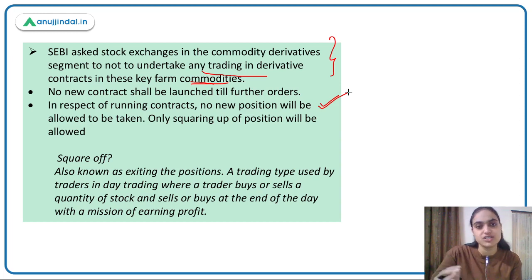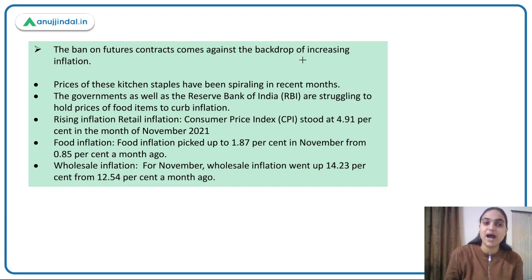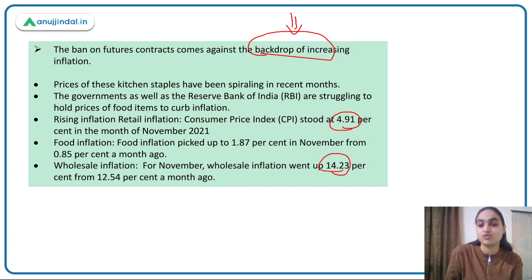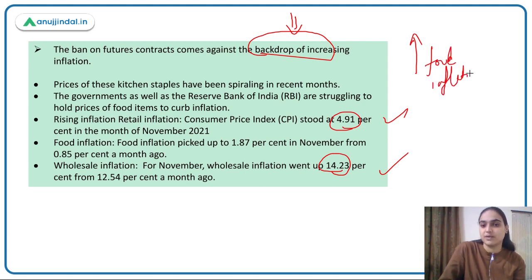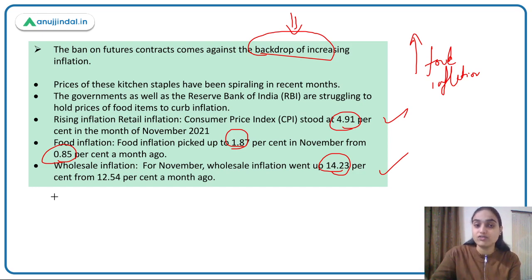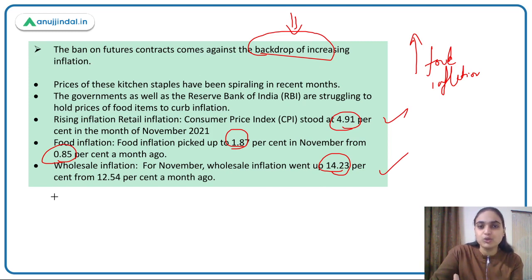The ban has been imposed against the backdrop of increasing inflation. CPI rose to 4.91% and wholesale price inflation rose to 14.23%. A major reason behind rising inflation was food inflation — it was 0.85% one month and increased to 1.87% in November. Kitchen staple commodity prices have been rising significantly. The RBI is taking steps to curb inflation, and the government reduced taxes on fuels and certain food commodities, but those were not enough.